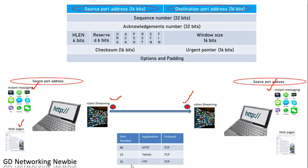Some well-known port numbers: for example, if you are using an HTTP program, then the port number used by the server will be 80. The port number for Telnet — if you want to get connected with some remote application — is used via Telnet. And for FTP, when we want to transfer some files, that application also has a specific TCP port number.